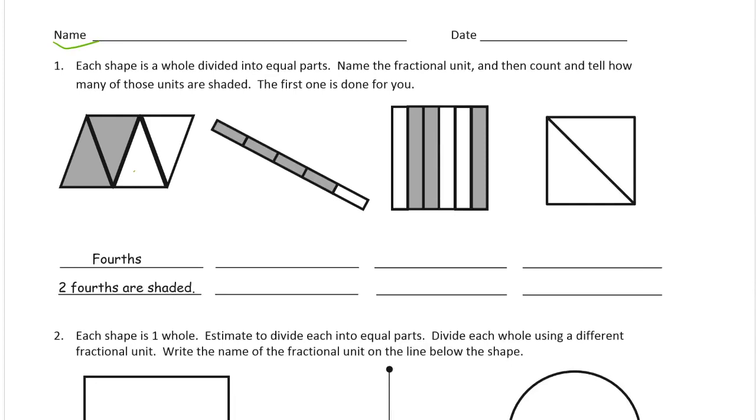There's one, two, three, four equal parts. So it's fourths and two fourths are shaded. This bar here is one, two, three, four, five. So there's five parts. So they are fifths and four fifths shaded.